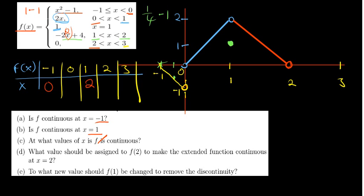The last piece: 2 is not included, and the function is f = 0, which is the x-axis itself. It runs all the way to x = 3, but 3 is also not included, so there's an open circle at x = 3. We need to be careful and show it's not continuous at those endpoints. We've now sketched the entire piecewise function.